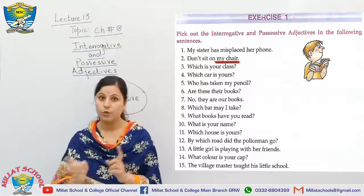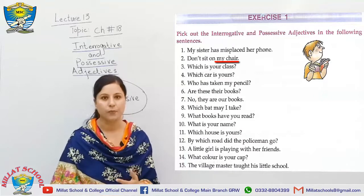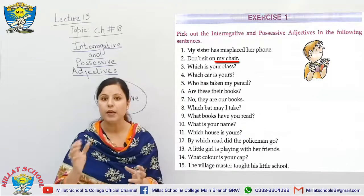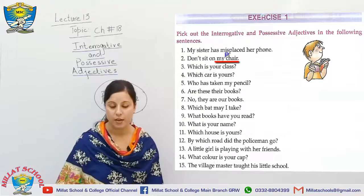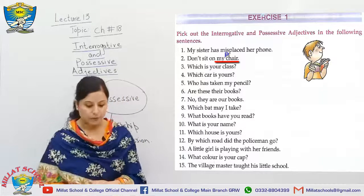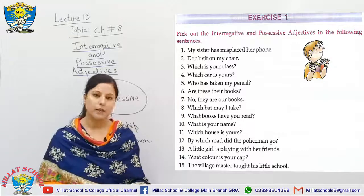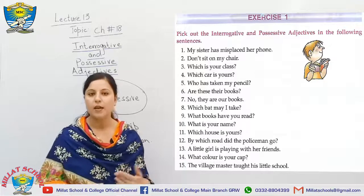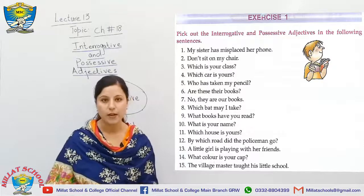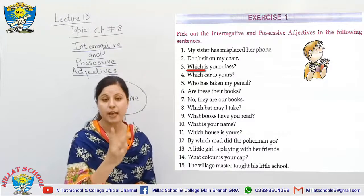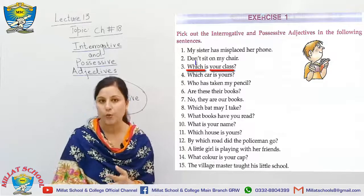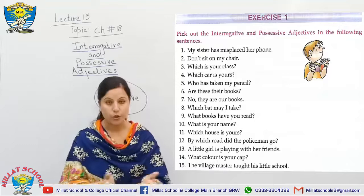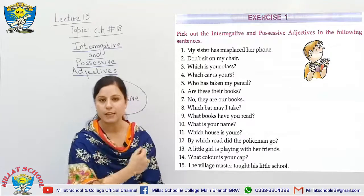Sentence two: 'Don't sit on my chair.' The possessive adjective is 'my chair.' Sentence three: 'Which is your class?' Here we have two different categories in a single sentence — 'which' is interrogative and 'your' is possessive. Sentence four: 'Which car is yours?' Again two categories — 'which' shows interrogative sense and 'yours' is possession.